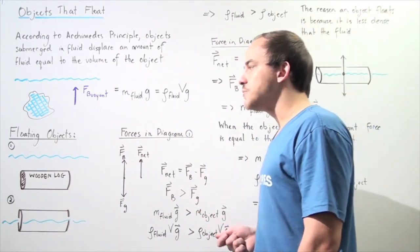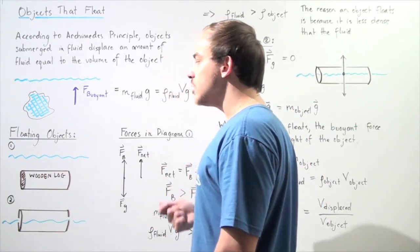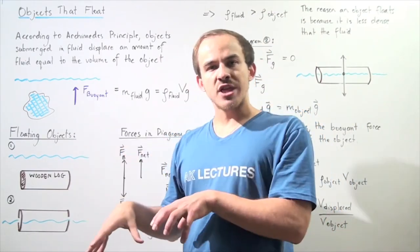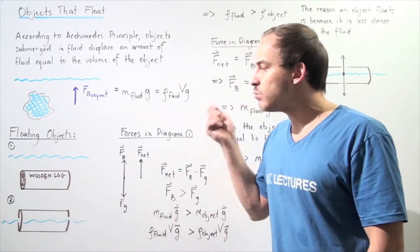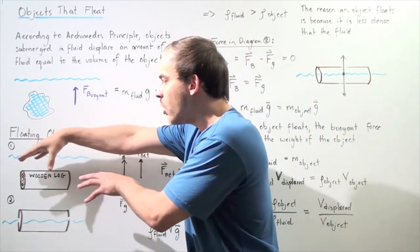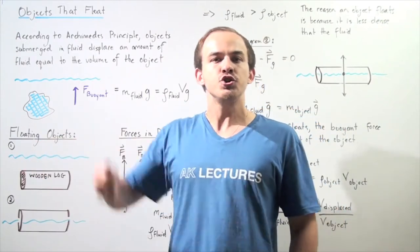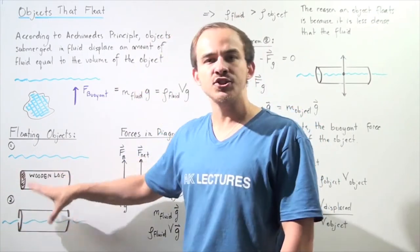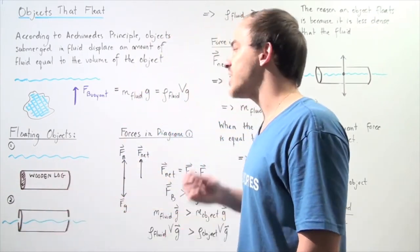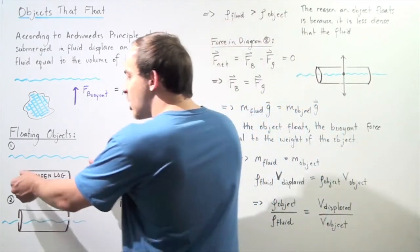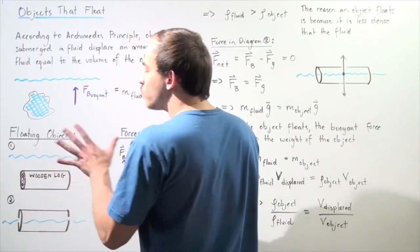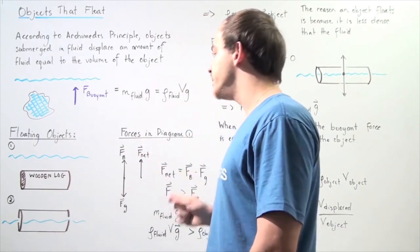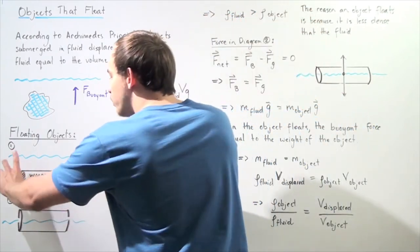Now let's talk about floating objects. As a particular example, let's choose wood. Suppose we take a log of wood and submerge it into a fluid — let's say water. If we submerge the log of wood and then let go, that wood will shoot back up and eventually come into static equilibrium, remaining on the surface of the liquid. In other words, it will float. At the moment that we let go of the object, let's draw all the forces acting on the wooden log.